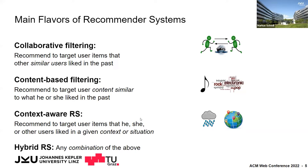Then we have context-aware recommender systems. As the name suggests, they consider, in addition to the interactions between users and items, the context or situation at which the user consumed the item. Typical examples are weather conditions or locations. And then finally, we have hybrid recommender systems, which we interpret as any combination of at least two of the above-mentioned approaches.